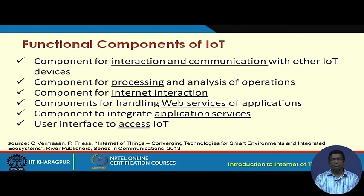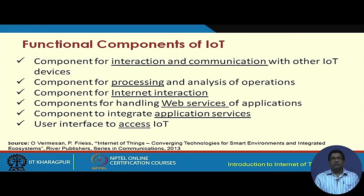We also have web services and machine-to-machine communication. Unlike typical web technology involving human-to-machine communication, in IoT we have machine-to-machine communication where one machine senses and sends data to another machine and offers services to it. Additionally, there has to be a user interface — a human interface — for accessing the IoT network, and this forms another important functional component.